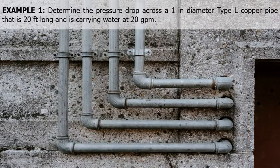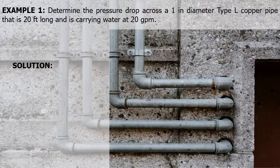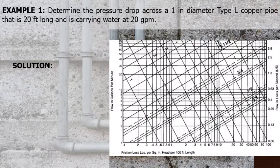Let's have an example. Determine the pressure drop across a 1-inch diameter type L copper pipe that is 20 feet long and is carrying water at 20 gallons per minute. In this problem, we will be using Figure 13.6, which is a pressure drop chart for smooth pipe or copper tubing.